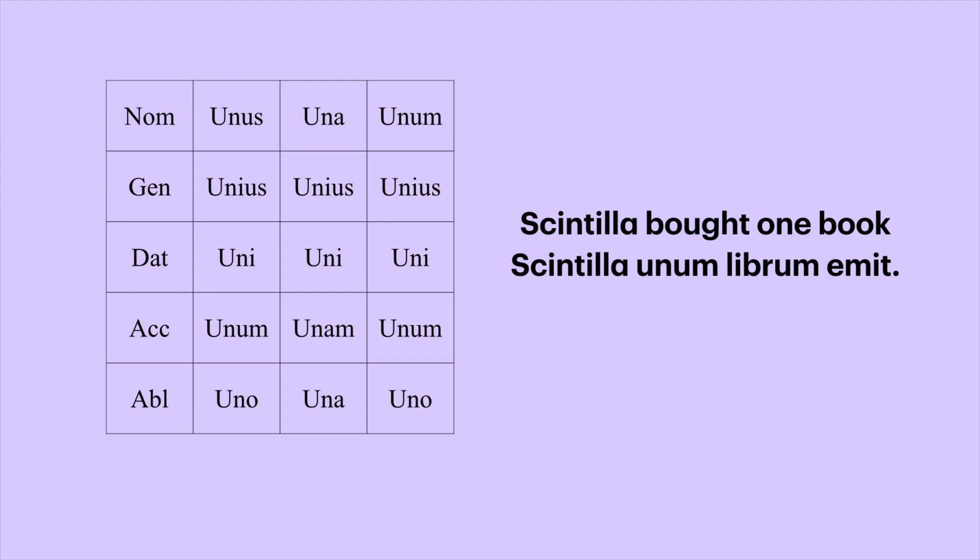One — unus, una, unum — declines mostly like a first/second declension adjective, but the genitive and dative are like illa, illa, illud. For example: unius in the genitive, and uni in the dative. Let's see this in a sentence.